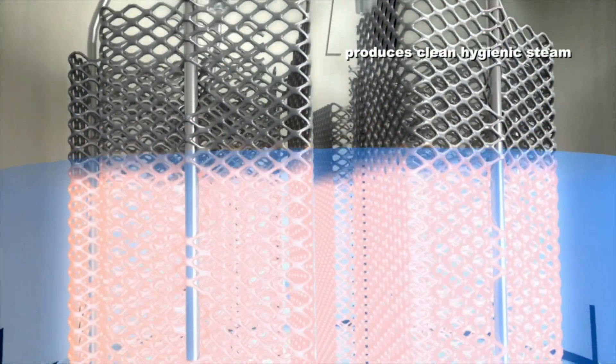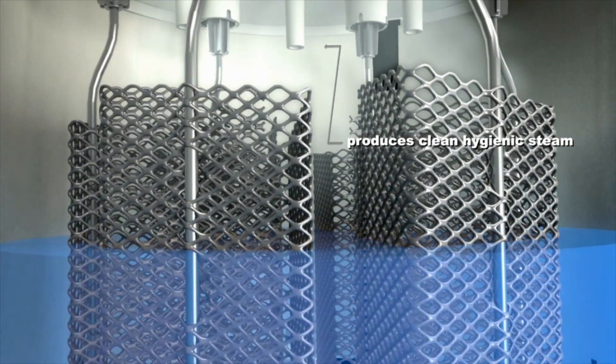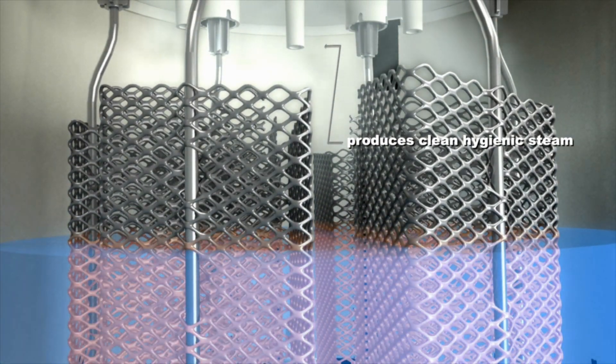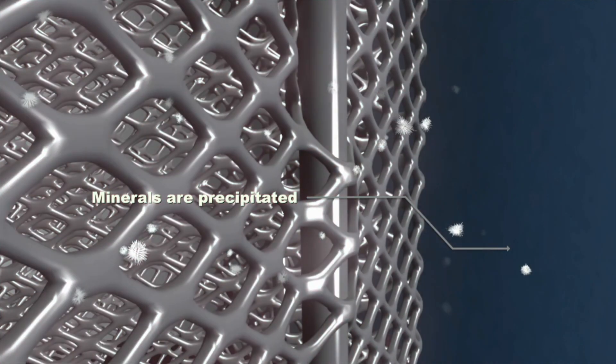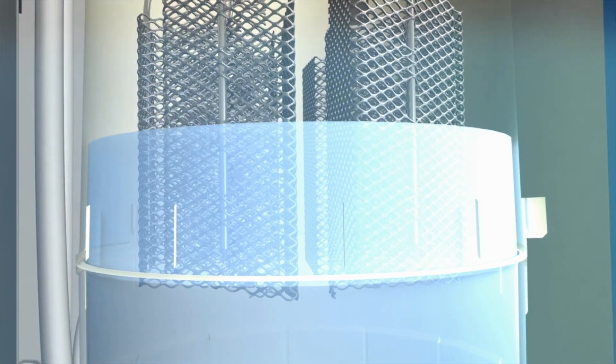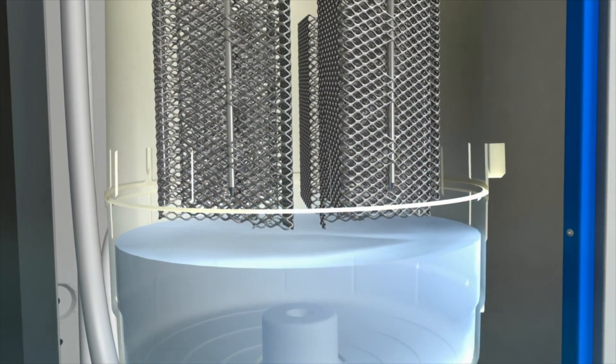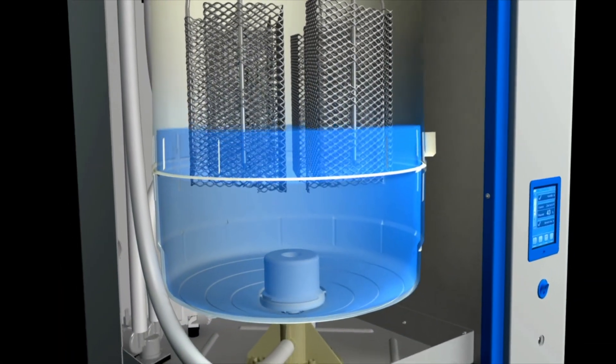The mineral content of the water steadily grows as water evaporates, increasing its conductivity. The mineral concentration must be reduced. This is achieved by rapidly replacing high mineral content water with fresh water to maintain consistent steam output.